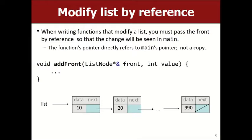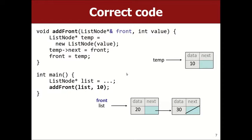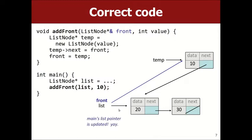With the ampersand added, the same code now does something very different. I make the list node temp, set temp next to be front, so it points there. Now when I say 'front equals temp,' it makes front — and list — both point to the new node. That's why this version works. The prototype and body declarations also have to match, so the prototype needs the ampersand too. Once that's fixed, it adds the thing at the front.